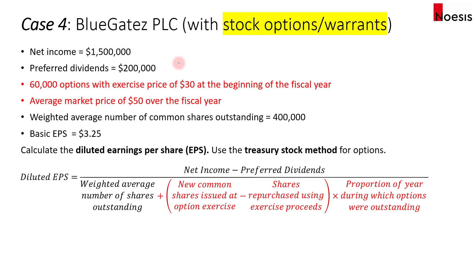For our last case, we will look at stock options, also called warrants. For Blue Gates, at the beginning of their fiscal year they have 60,000 stock options with an exercise price of $30. The average market price over the fiscal year is $50. We'll calculate the diluted EPS using the treasury stock method — the name used under US GAAP. IFRS uses a similar method with the same steps, just without the same name.